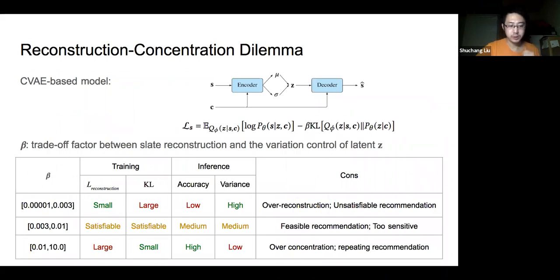Now we can observe how generative models behave in terms of slate recommendation. We use existing CVAE-based model, whose optimization involves a factor beta which trades off between slate reconstruction loss over the training records and the KL divergence that controls the distribution of the latent slate encoding z. In our observation, we found that most settings of beta either fall into over-reconstruction extreme or the over-concentration extreme.